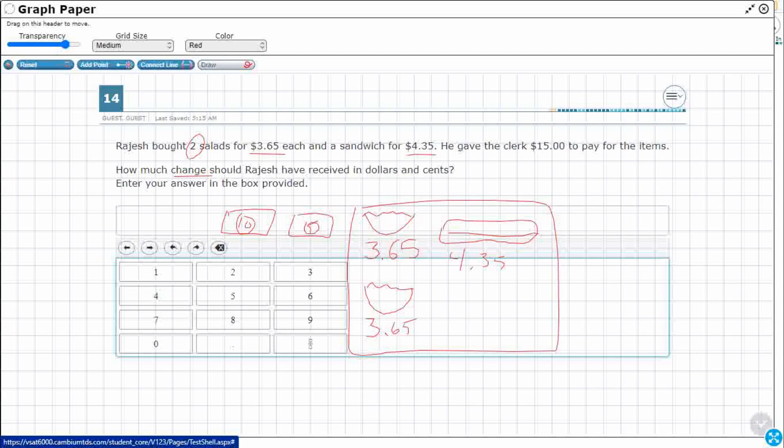So if I wanted to represent this in a strip diagram like a part-part-whole - actually, technically it'd be a part-part-part-whole - this is what we're looking at. We're looking at $3.65 twice, and then we're looking at $4.35, and we're missing the total.